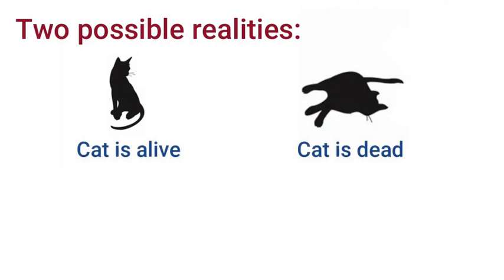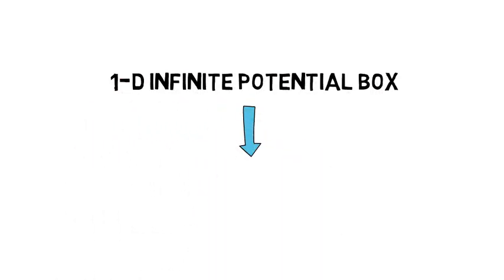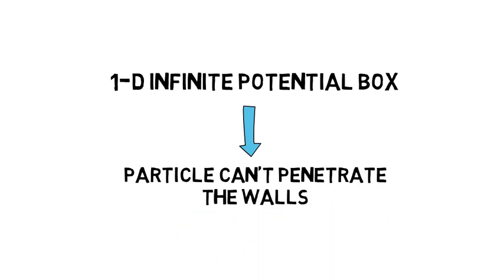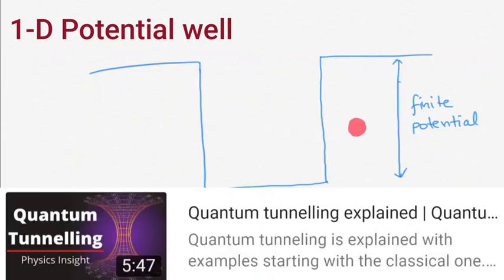Now let's come to another thing: quantum tunneling. If we have an electron inside an infinite 1D potential well, it is not possible for the electron to penetrate the wall. But if we have a finite potential well, then there are chances that the electron can penetrate the wall, which is not found in the classical world. You can see this in detail in this video. You will find the link in the description or in the i-button.